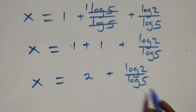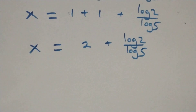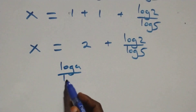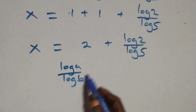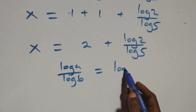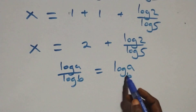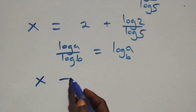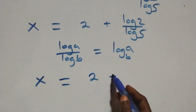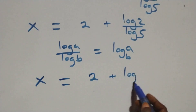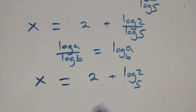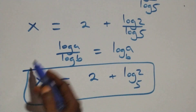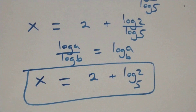Next step: we apply the change of base formula. When we have log a over log b, this is the same thing as log a to base b. Therefore, we have x equals to 2 plus log 2 base 5. That is the value of x: 2 plus log₅2.